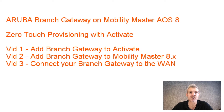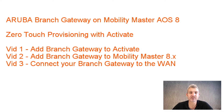In video two, I'll add a branch gateway to Mobility Master and VPNC and cover the settings required there. In video three, we will actually connect the branch gateway — zero-touch provision it. It will first write-erase and then connect to the internet, and if steps one and two were done properly, it should self-deploy.